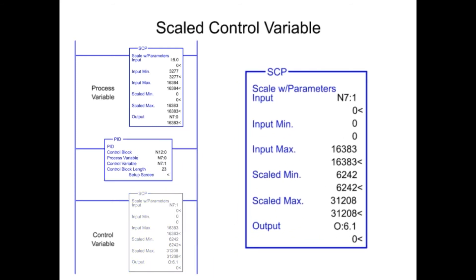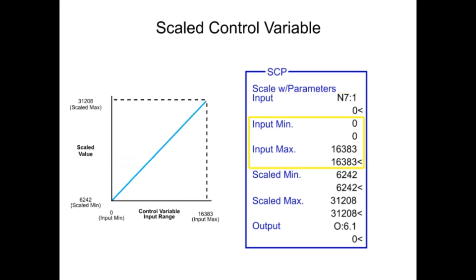Next, the control variable range of 0 to 16,383 is scaled to an analog output module using a second Scale with Parameters instruction. The input parameter of the SCP contains the memory address of the PID output values that will be scaled. The input minimum and input maximum are programmed as the smallest and largest values of the input range. The input value is then scaled between the ranges programmed in scaled minimum and scaled maximum parameters. Scaled minimum value is programmed as 6,242, representing the low end of the analog output module range. Scaled maximum value is programmed as 31,208, representing the high end of the analog output module range. The SCP output parameter is the file address of the analog output module.